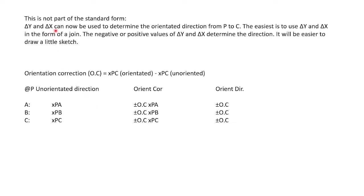So it's not part of the standard form, but difference of x and y can be used to determine the orientated direction from P to C. The easiest is to use x and y in the form of a join. The negative or positive values of y and x determine the direction. When you calculate a join, you usually work out your delta y and your delta x. And then from that, you'll determine your direction and your distance. In this case, we're more focused on our direction instead of the distance.